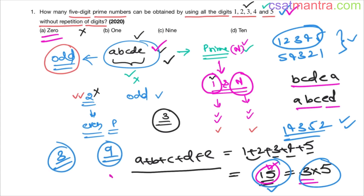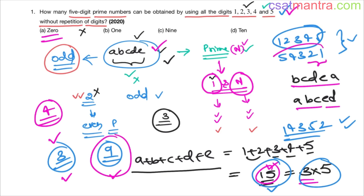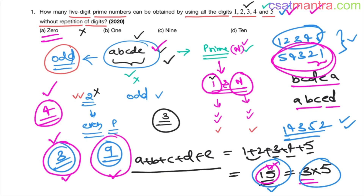Either the divisibility-by-3 rule or the divisibility-by-9 rule applies. If a number is divisible by 9, it is also divisible by 3, so you only need to check for 3. Checking the last two digits for divisibility by 4 is not enough to confirm primality — you would have to check each case individually, which is very lengthy. So the problem is always based on the sum of digits: if the sum is divisible by 3, numbers formed by those digits can never be prime.